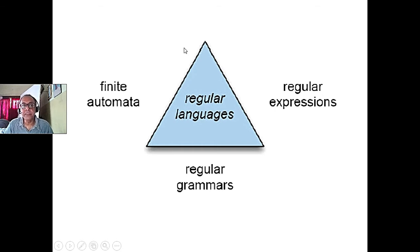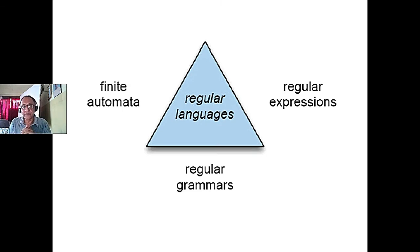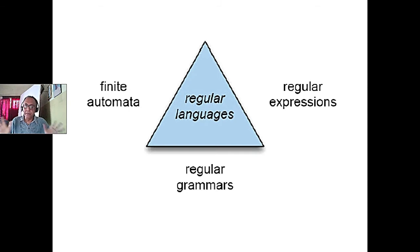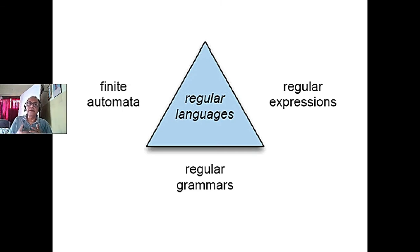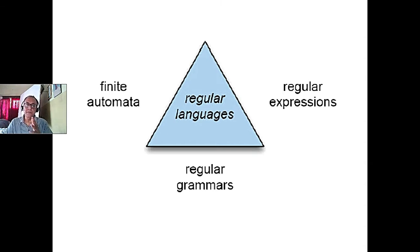A lot of computation can be done with finite state machines. For example, when writing a program in C or Java, the first stage of compilation extracts tokens. If you write 'integer i1' or 'integer equal to i1 plus 2,' all the declarations are tokenized by a deterministic finite state machine — no Turing machine or pushdown automaton is needed. The first pass of any compiled or interpreted programming language is always done by a finite state machine that extracts variable name tokens.